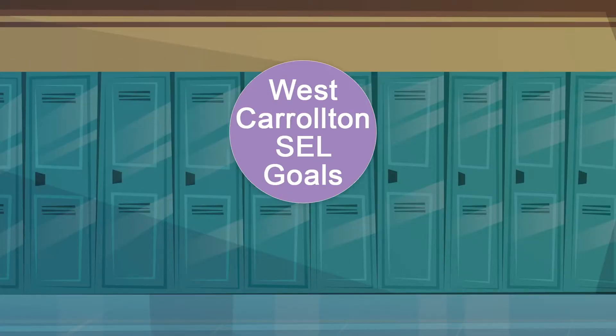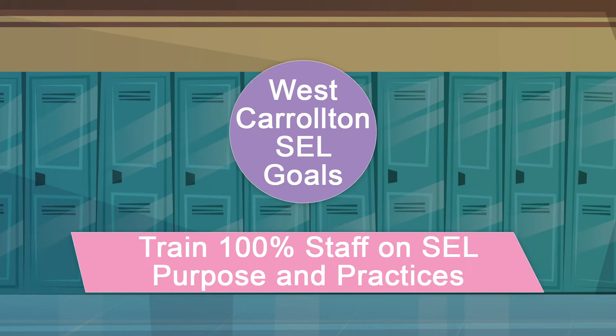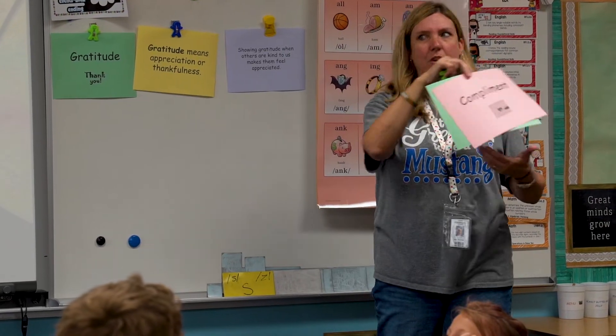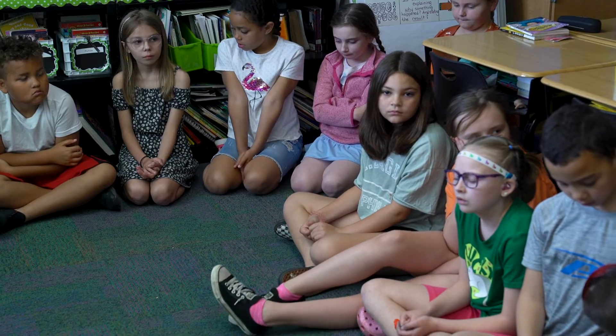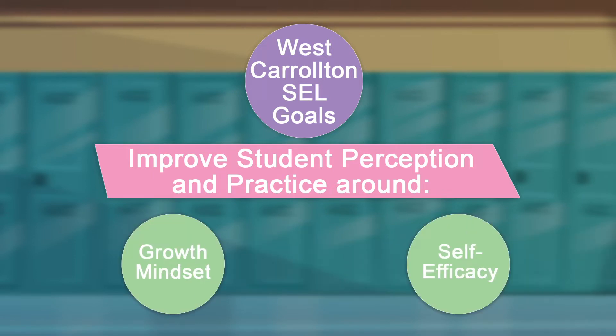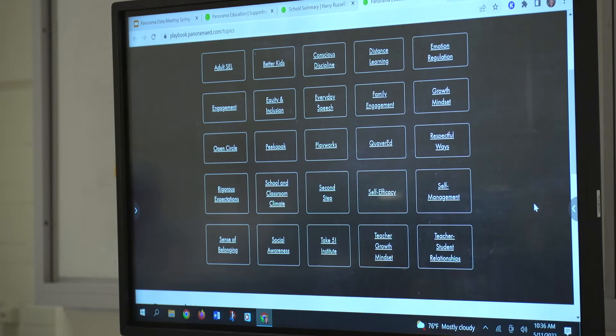We did a vision board — what do we want our students to be able to do when they're 12th graders or leaving in 8th grade? The goals we set forth were specific in four areas: ensuring all adults in the district were trained on what SEL is and its importance, and three additional goals focused on reaching 90% in the areas of growth mindset, self-efficacy, and teacher-student relationship as measured by survey.